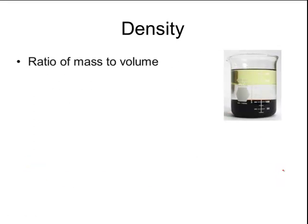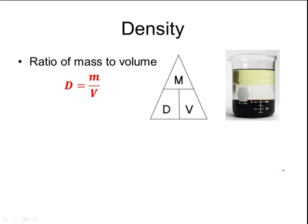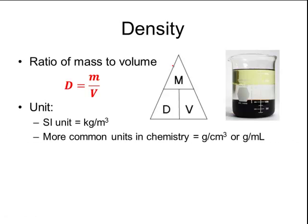Density is another derived unit. Density is the ratio of mass to volume. It has the equation D equals mass divided by volume, or M divided by V. Sometimes you can draw these triangles on your paper to help you to calculate density by covering up one of the values depending on what you want to solve for. The unit for density, the SI unit, is kilograms divided by meters cubed. Because remember, the standard unit for mass is a kilogram, and the standard unit for volume is meters cubed. However, when we're doing chemistry, more often you will see units of grams per centimeter cubed, or grams per milliliter, when we're talking about density.